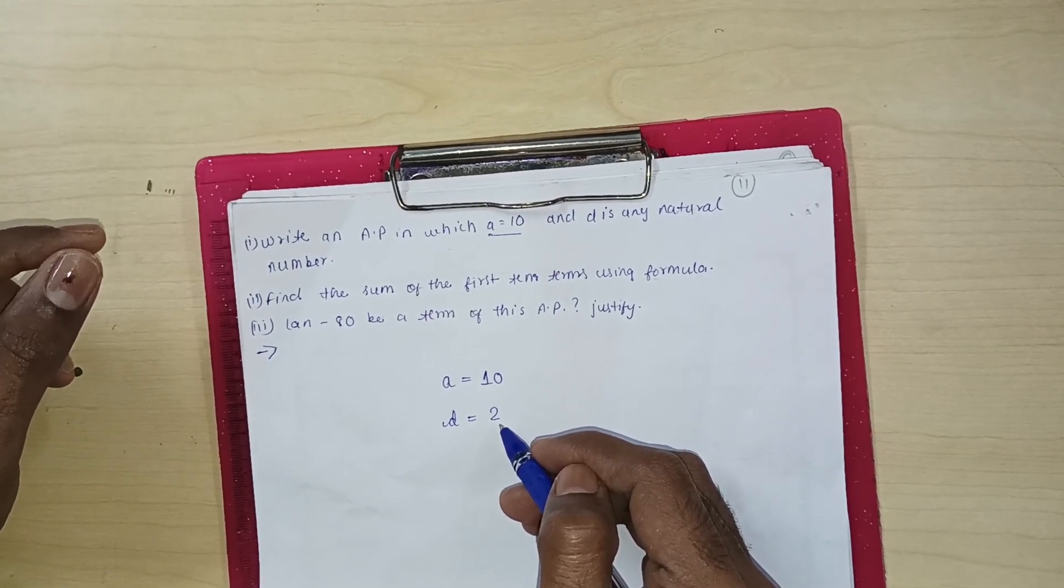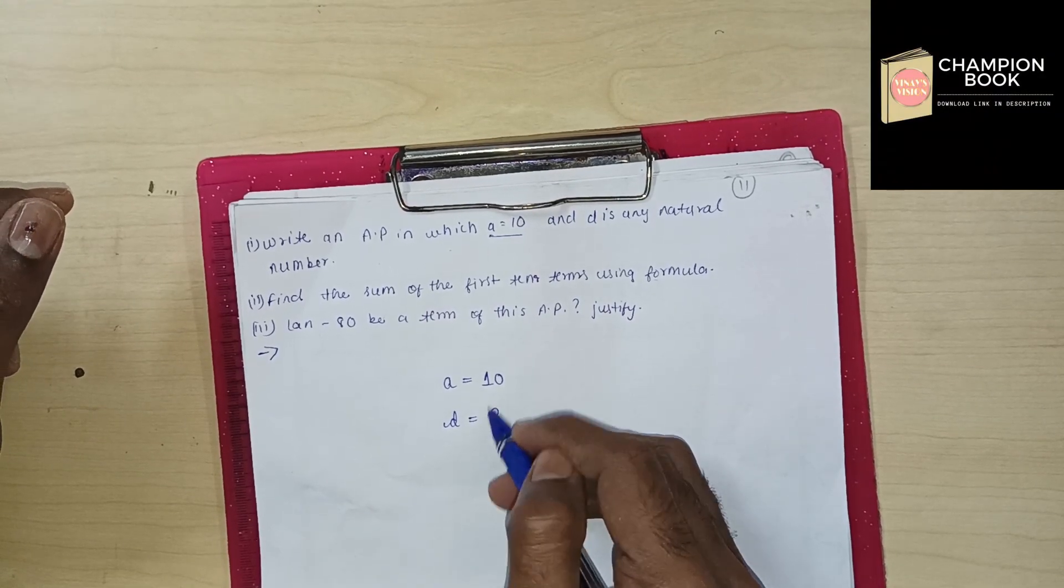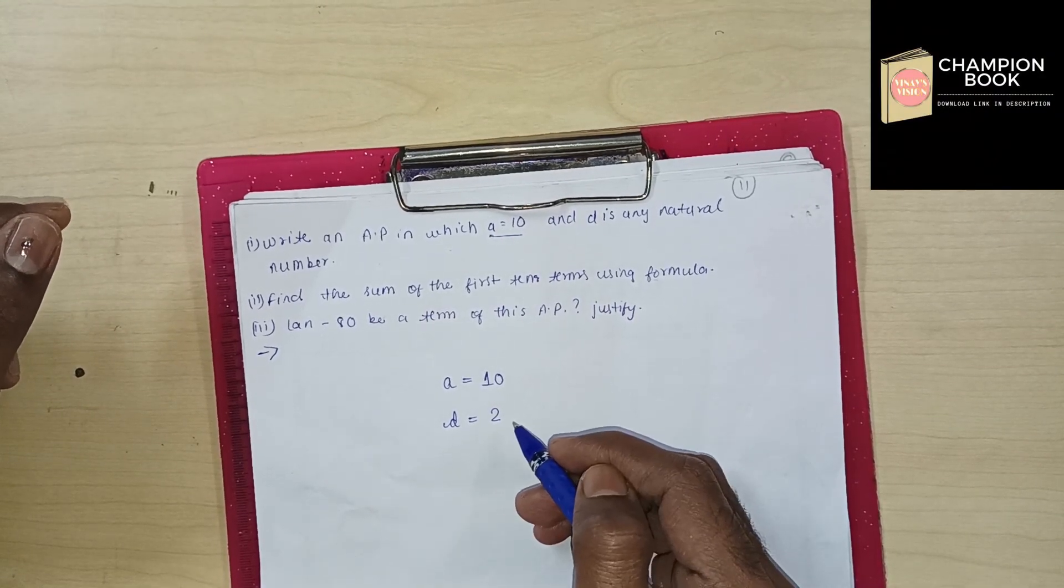3, 5, 7, 11, 13, 17, 19. If you look at the prime numbers, all are odd. 2 is a prime number, which is even.